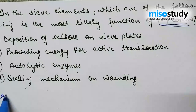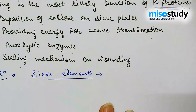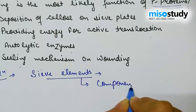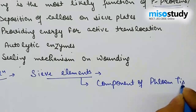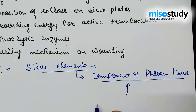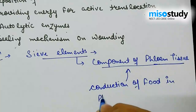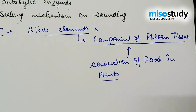When we discuss about sieve elements — sieve elements are components of phloem tissue. These phloem tissues help in the conduction of food in plants. When we discuss about sieve tube elements, the sieve element has a peripheral layer of cytoplasm that surrounds it.